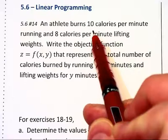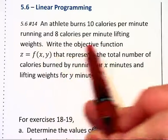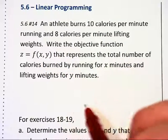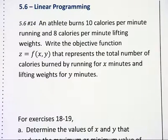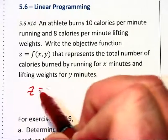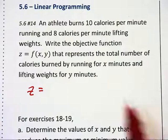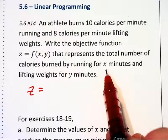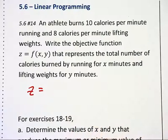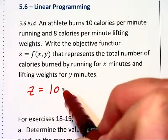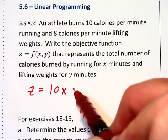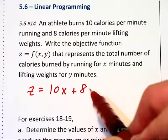An athlete burns 10 calories per minute while running and 8 calories per minute while lifting weights. We want to write an equation for z representing the total number of calories burned when the athlete runs for x minutes and lifts weights for y minutes. This will end up just being 10 calories for each x and 8 calories for each y.